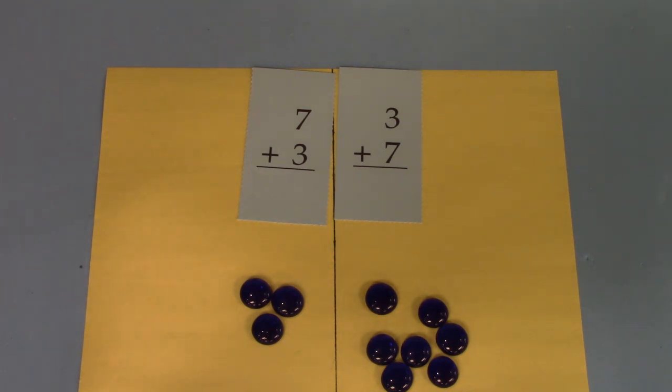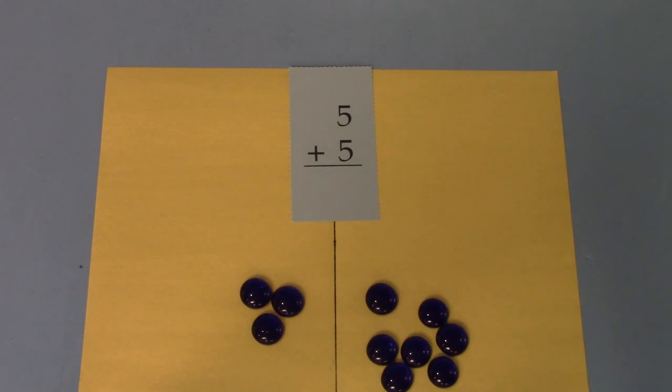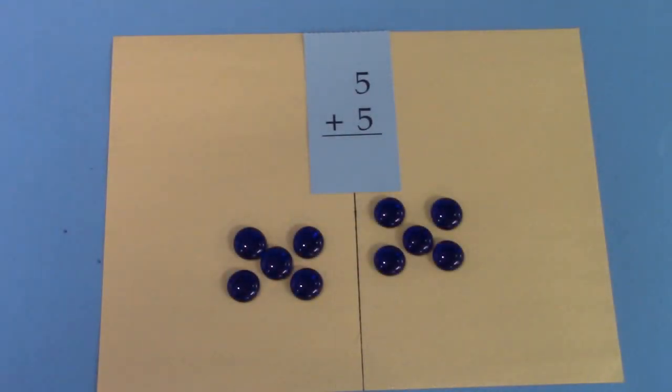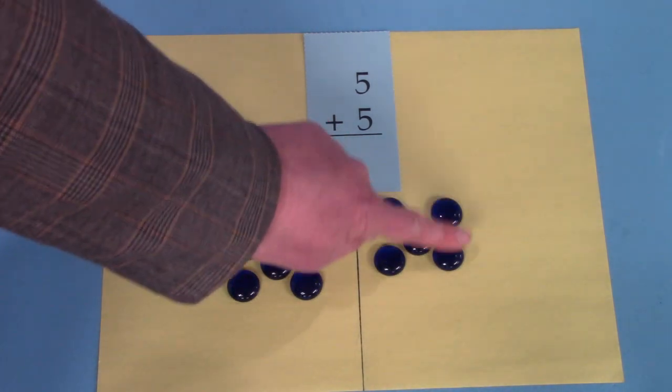I'm going to keep our ten gems there and I am going to switch our fact. And I know you know this one already. Five plus five. Five plus five is ten. Five, six, seven, eight, nine, ten.